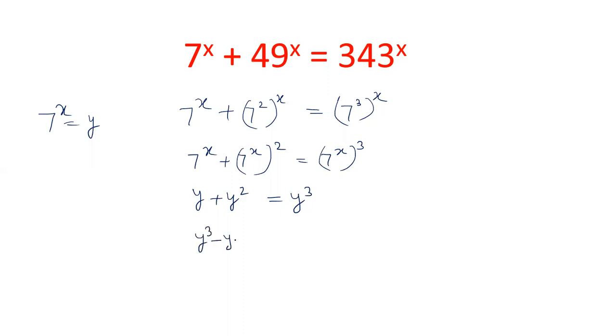Transferring all the terms to one side, y cubed minus y squared minus y minus 1 equals 0. So we have either y equals 0 or y squared minus y minus 1 equals 0.